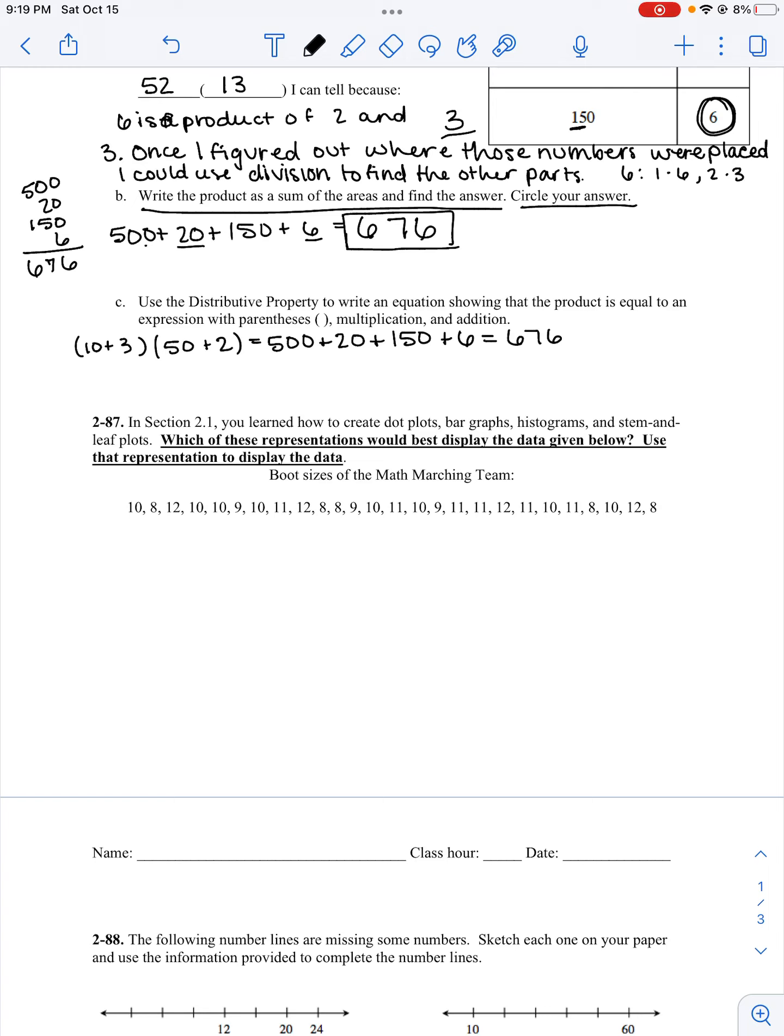Number 87. In section 2.1, you learned how to create dot plots, bar graphs, histograms, and stem and leaf plots. Which of these representations would best display the data given below? Use that representation to display the data. These are boot sizes of the math marching team. The first thing I notice, my data is numerical.